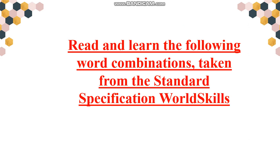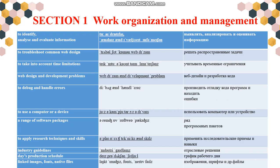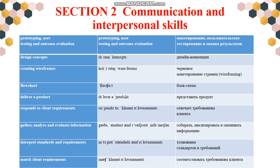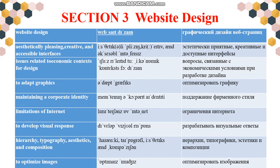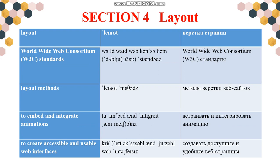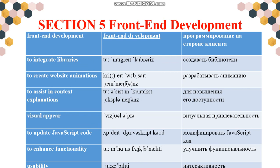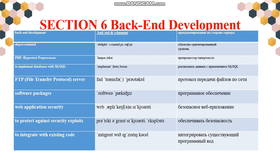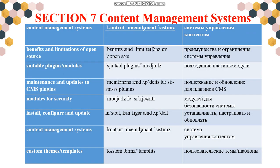The next task is: read and learn the following word combinations taken from the standard specification of World Skills. You have to write these word combinations in your vocabularies and learn them by heart. Section 1: work organization and management. Section 2: communication and interpersonal skills. Section 3: website design. Section 4: layout. Section 5: front-end development. Section 6: back-end development. Section 7: content management systems.